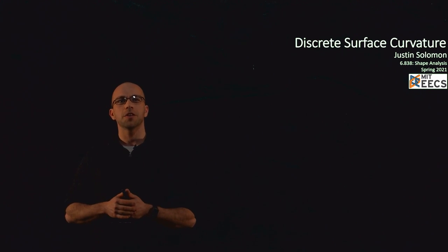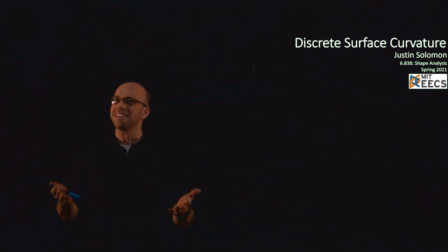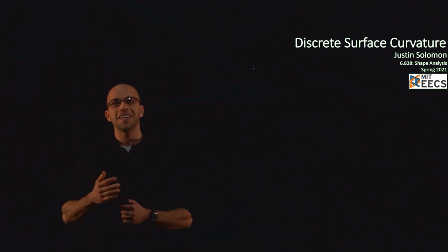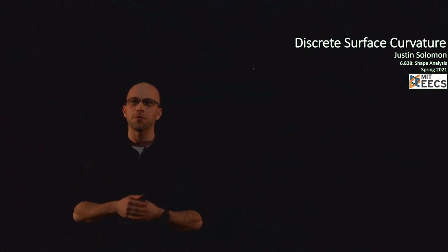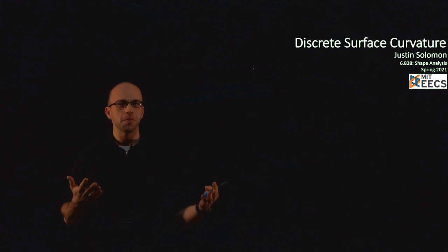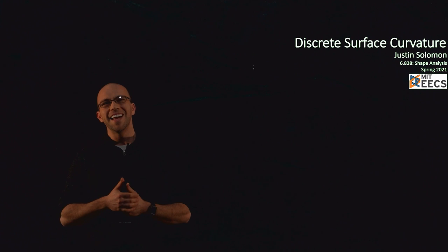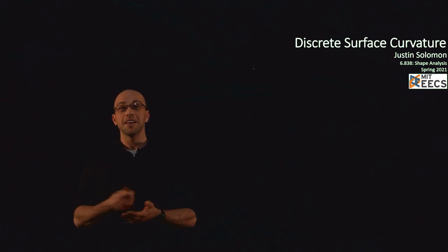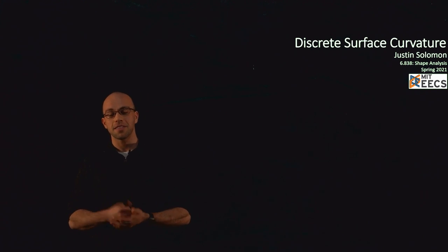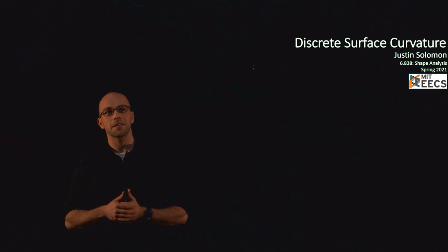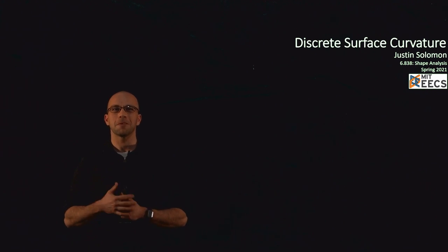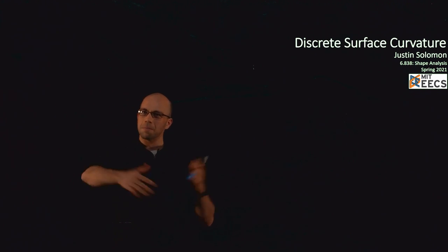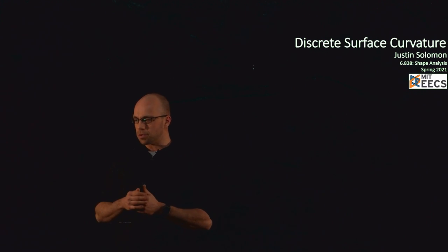Hello everybody, and welcome to the next lecture of 6.838. Today we're going to be continuing in our ping pong back and forth between discrete and smooth geometry. Today we're going to do discrete geometry and talk about how we can actually approximate curvature on triangulated meshes. Remember that in our previous lecture we developed a nice theory of how curvature might work on a smooth surface. Today we're going to cover the more practical aspects of how to actually compute values like principal curvatures and principal directions when you're just given a big pile of triangles linked together into a manifold structure.